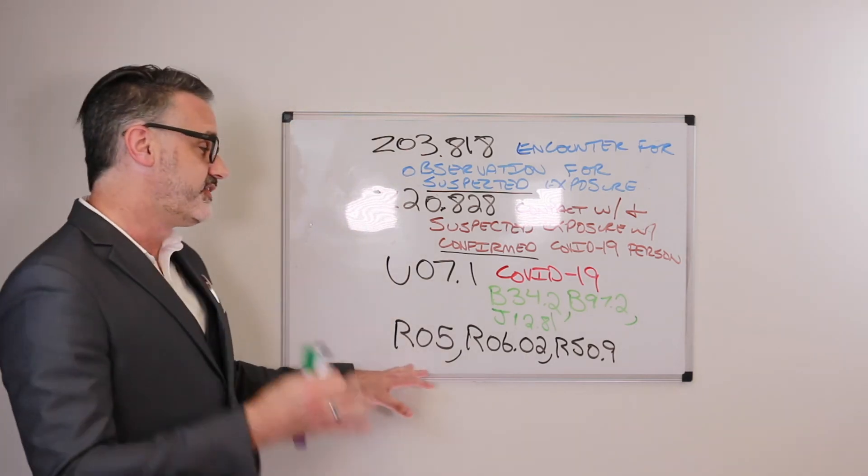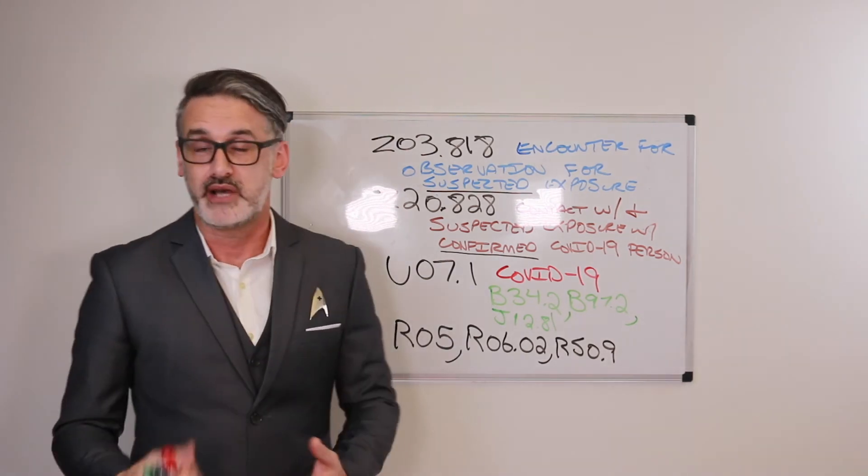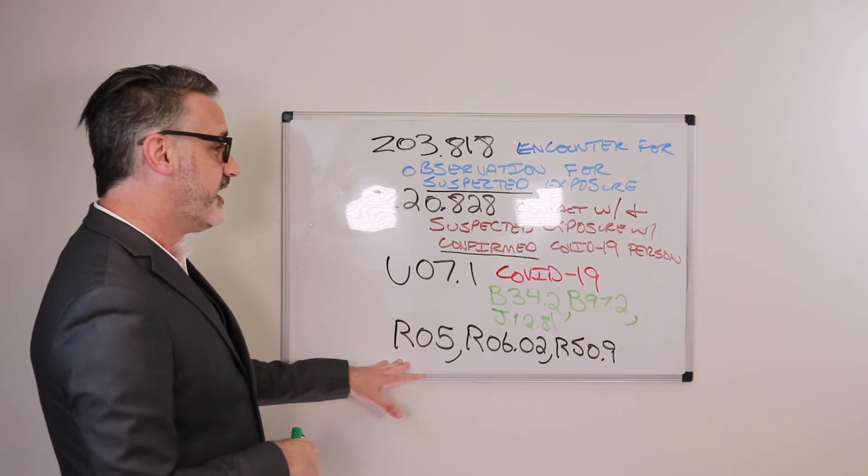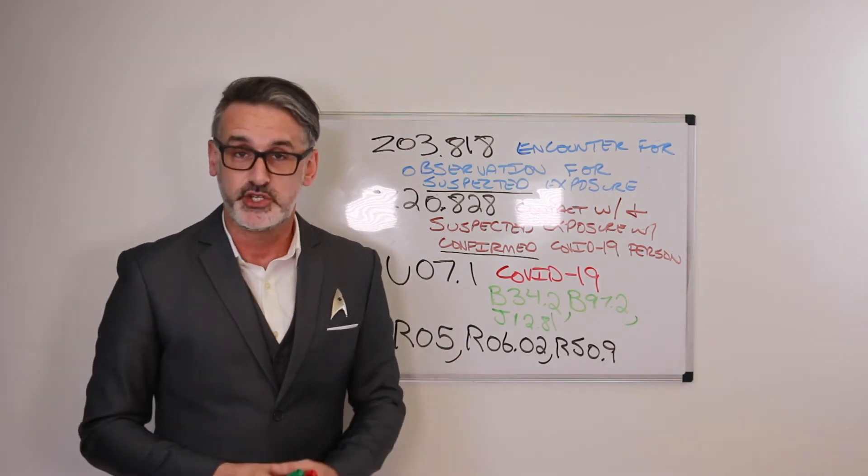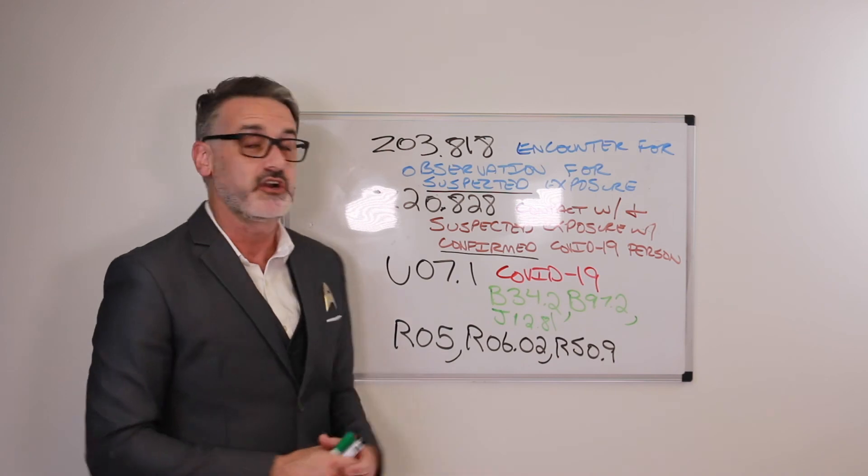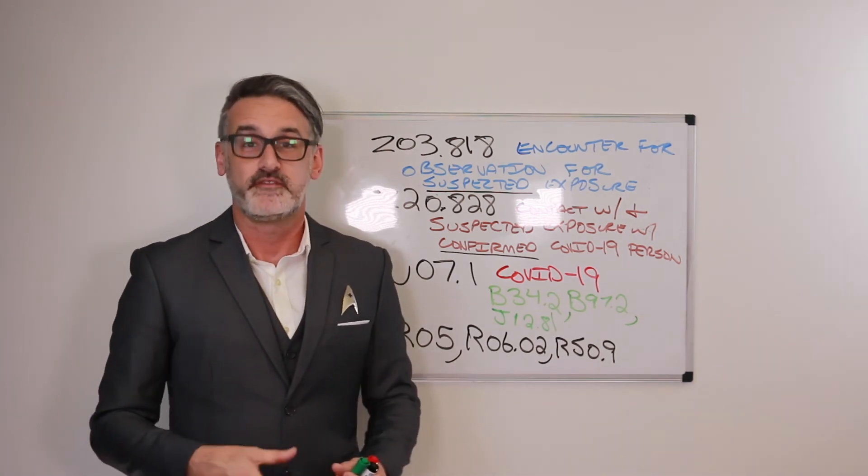U07.1 for positive COVID-19 results. And then if they're negative results, then we have to code some possible symptoms. R05 for cough, R06.02 for shortness of breath, and R50.9 for fever.